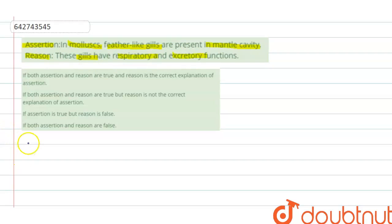So basically, in mollusks, there is a mantle and a visceral hump. If we assume this to be a layer of mantle and this to be a visceral hump, the space between them is known as the mantle cavity.